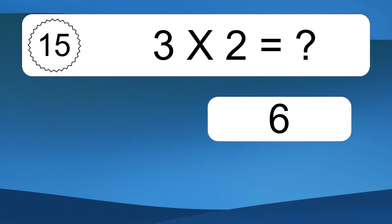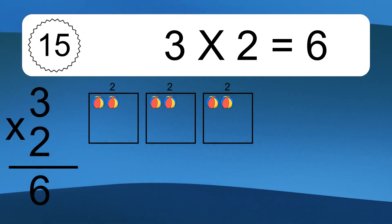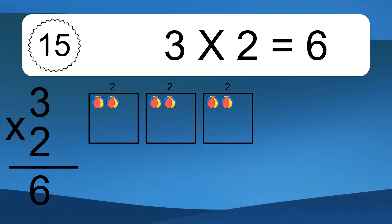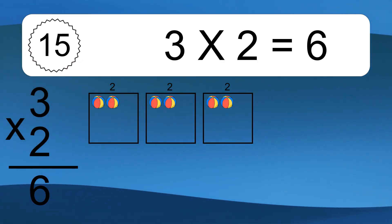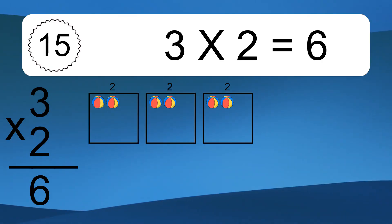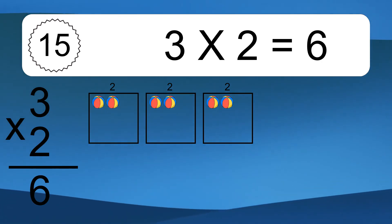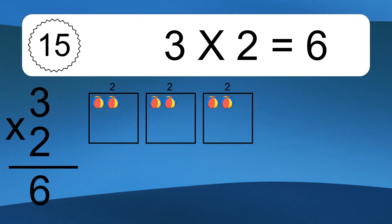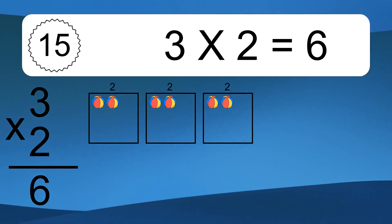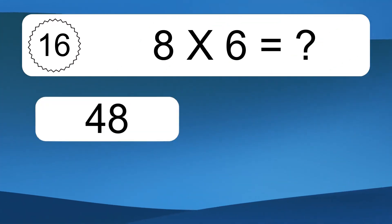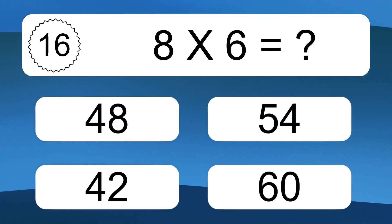3 times 2 equals what? 3 times 2 equals 6. We have 3 boxes, and each box has 2 colorful balls inside. If you count all the balls in all the boxes together, you will have 3 times 2 balls. This equals 6 balls.